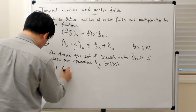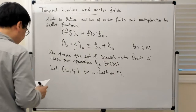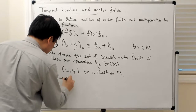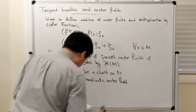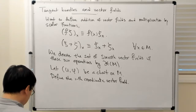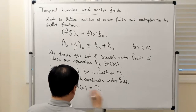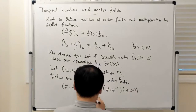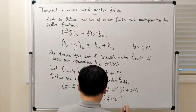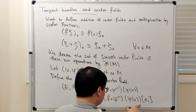The way you do this is as follows: given a chart on the manifold M, I'm going to define the i-th coordinate vector field. So Ei of F acting on X is defined to be the i-th partial derivative of F composed with φ inverse, at the point φ(X). This is just the derivative of F composed with φ inverse at the point φ(X).